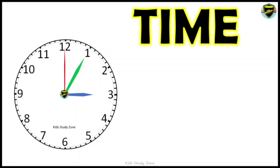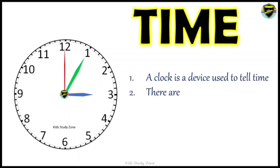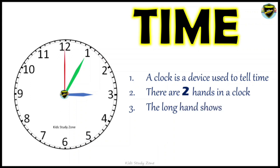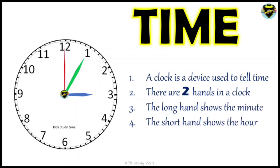In this video you will learn how to tell the time. A clock is a device used to tell time. There are two hands in a clock: the long hand shows the minutes, and the short hand shows the hour.